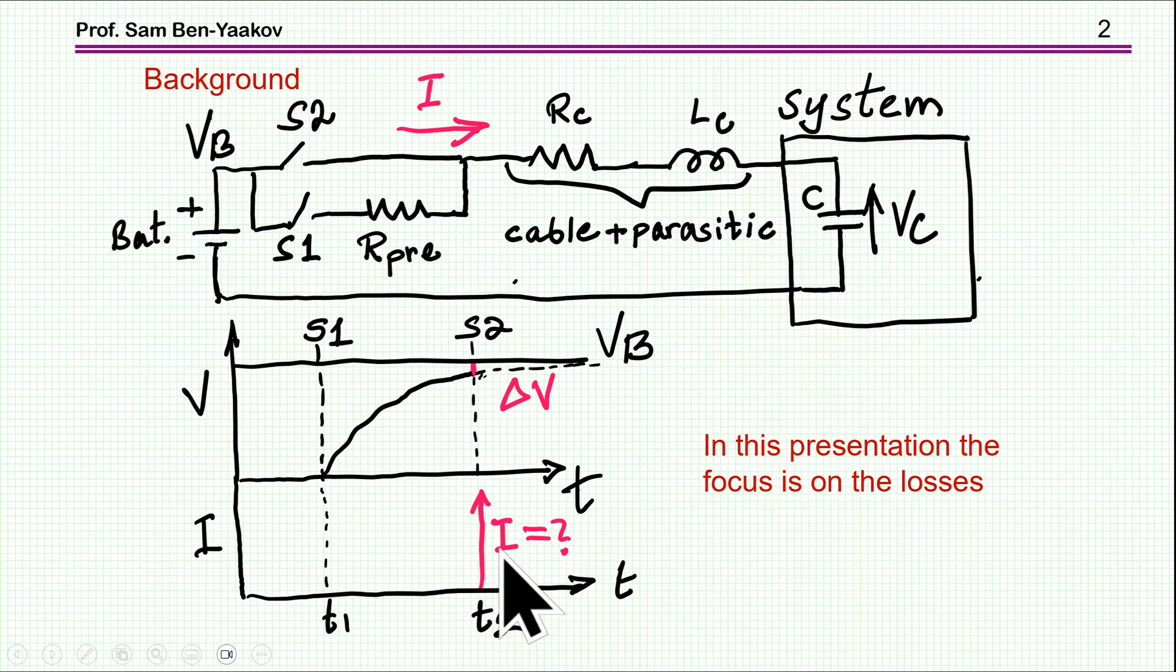In the previous presentation, I was talking about the current. What is the current that we develop at this point? And I'm considering a case in which the total inductance in the loop, that is the cable, the battery, and the capacitor inductances are taken into account here. And also the total resistance of the loop, like the battery, the cable, and of course the ESR of the capacitor. So this is like an equivalent circuit that takes into account the parasitics. This is not something that you like to put in, this is just the parasitics of the system. This is put in in order to start the precharge.